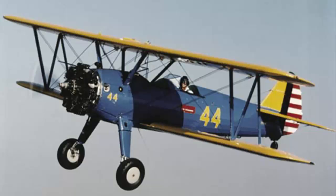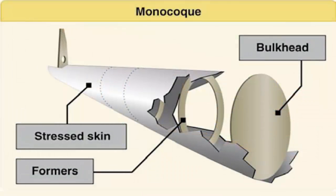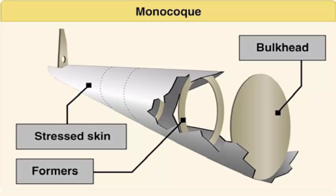In some cases, the outside skin can support all or a major portion of the flight loads. Most modern aircraft use a form of this stressed skin structure known as monocoque or semi-monocoque construction. Monocoque construction uses stressed skin to support almost all aerodynamic loads. Although very strong, monocoque construction is not highly tolerant to deformation of the surface.